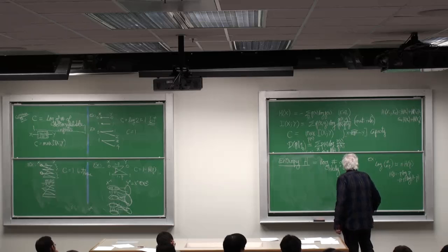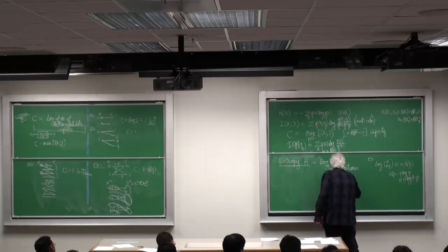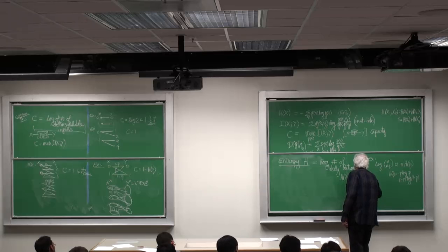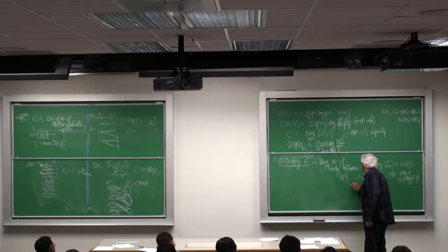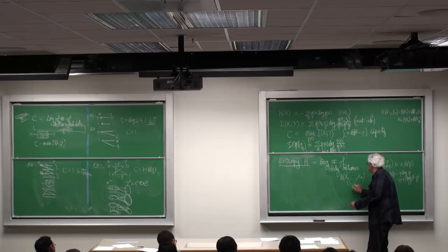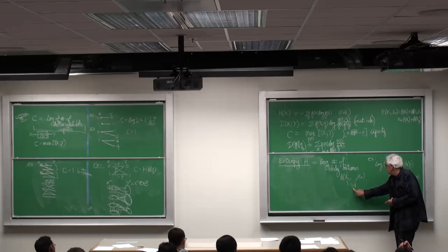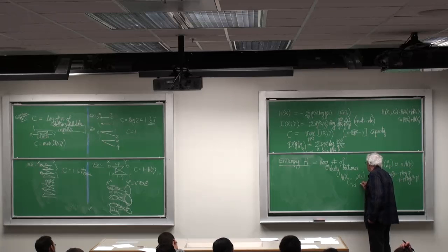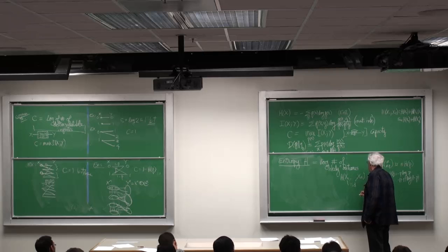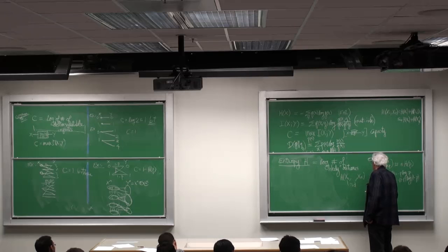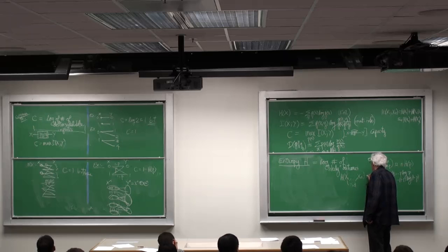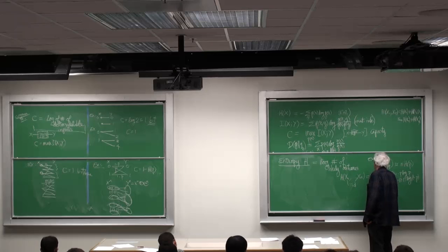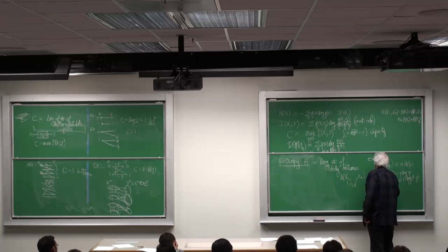So the entropy of n coin flips, IID, that's independent, identically distributed coin flips, is n H of P.